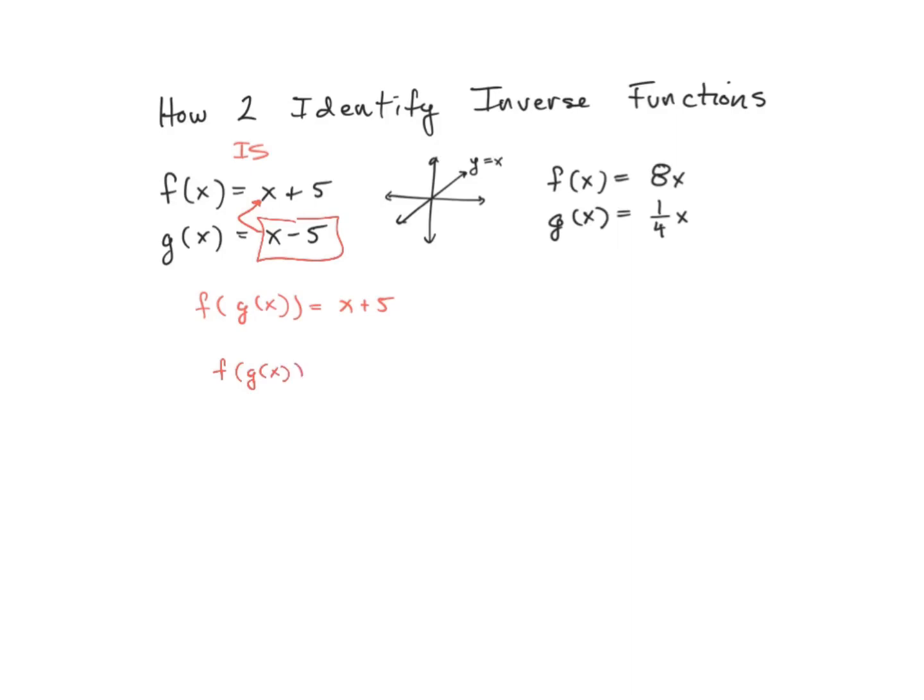equal to x minus 5 plus 5, and if you simplify, you end up with x. Now vice versa, if you're looking at g composed of f of x, you would have had x plus 5 minus 5, so you would have also had a result of x. So you see either way, this is something that is inverse because ultimately we're able to substitute in and find a function for x.